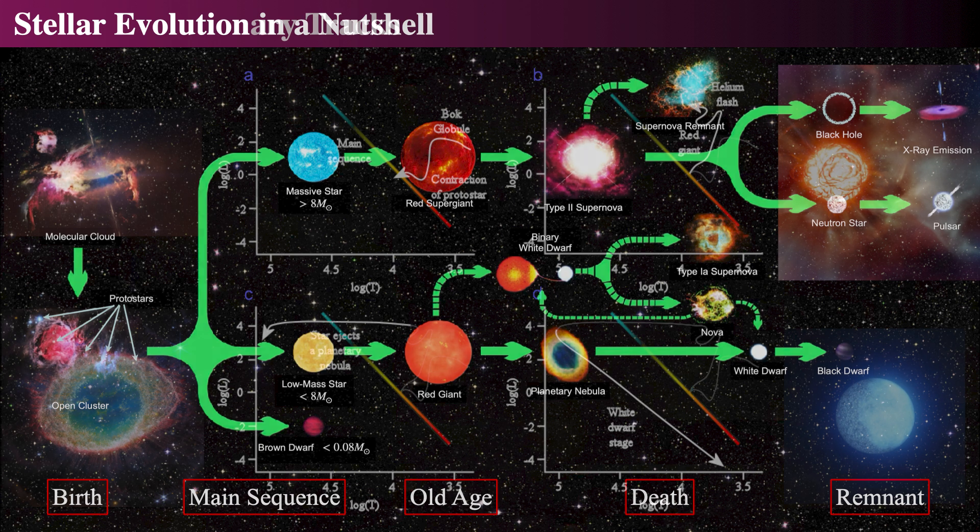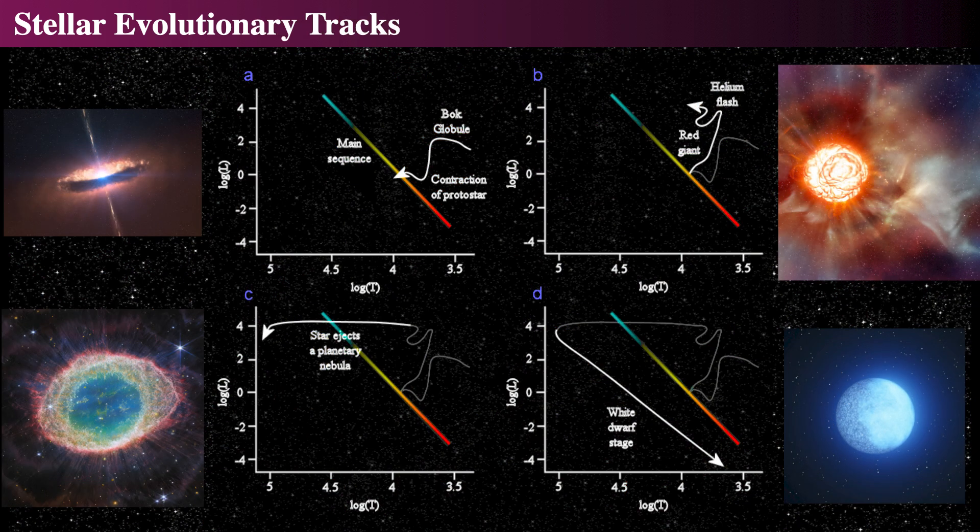We can look at the stages of an individual star's life instead on an HR diagram and follow its progress as it ages. A given star's spectral type and luminosity change as it ages, so they wander in a very specific way across this diagram. We call these evolution tracks on the HR diagram.